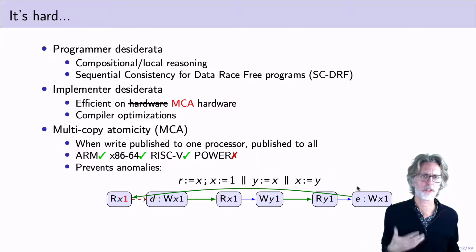MCA prevents certain anomalies. For example, in this program, I write x, copy it through a couple of threads, and then go back in time and read it before I wrote it. You can see that this causes a cycle in the POM set.